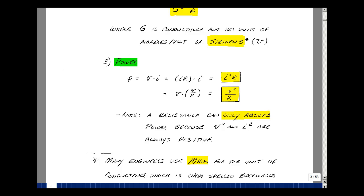Besides the unit of Siemens, there's also another unit that's sometimes used in textbooks, and it's actually the word mho, and it's Ohm spelled backwards.